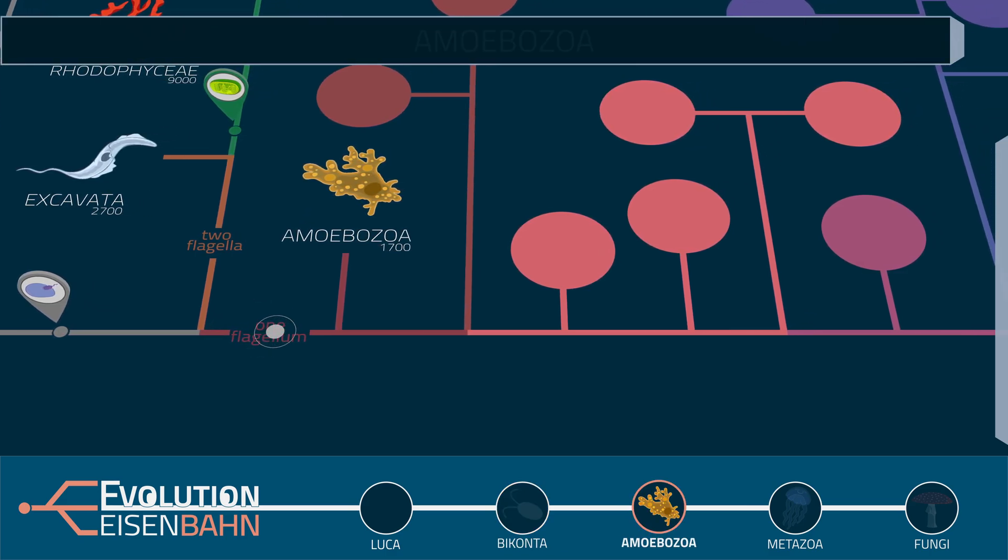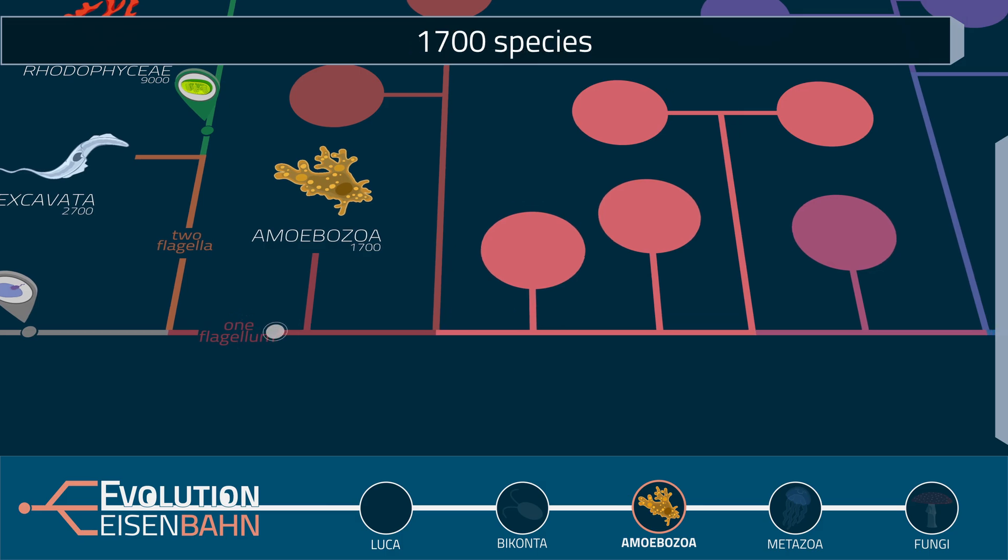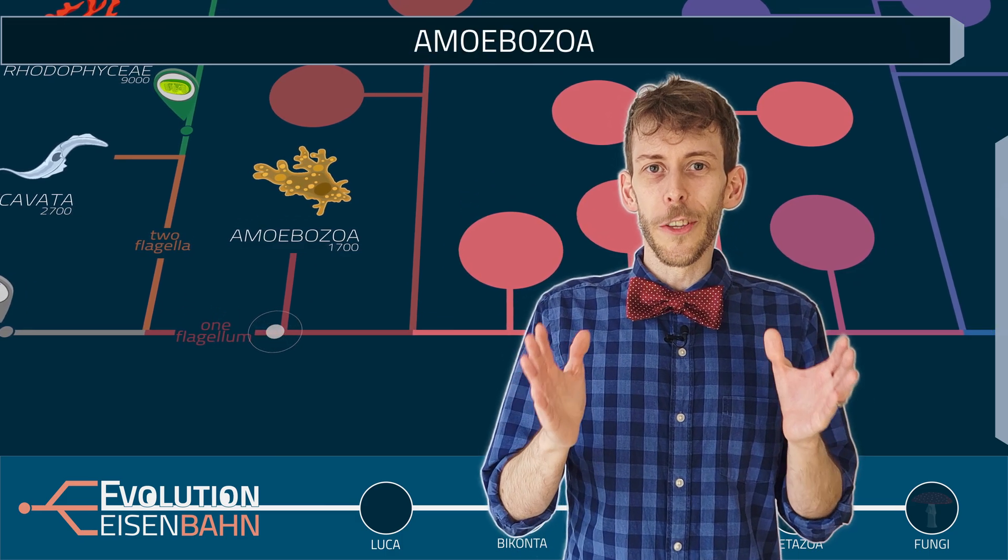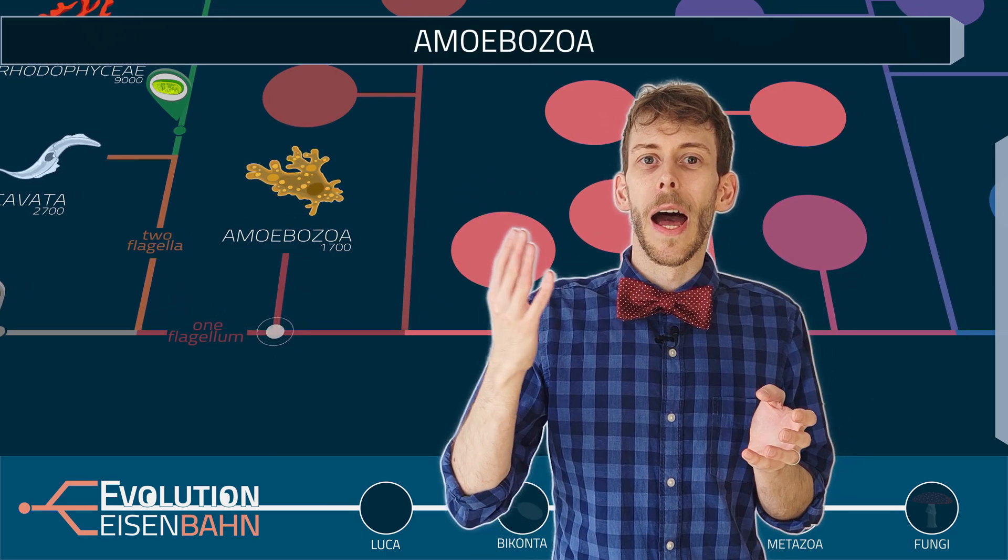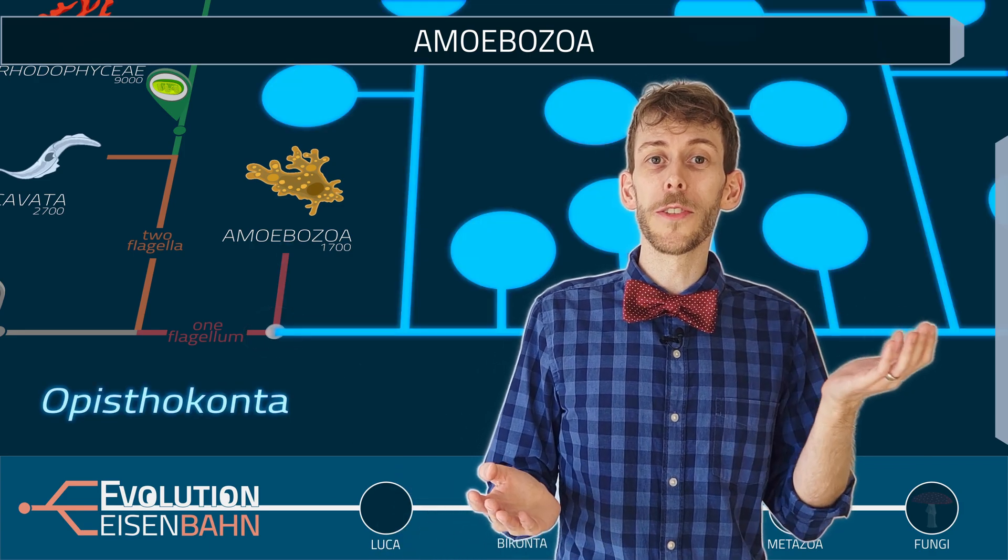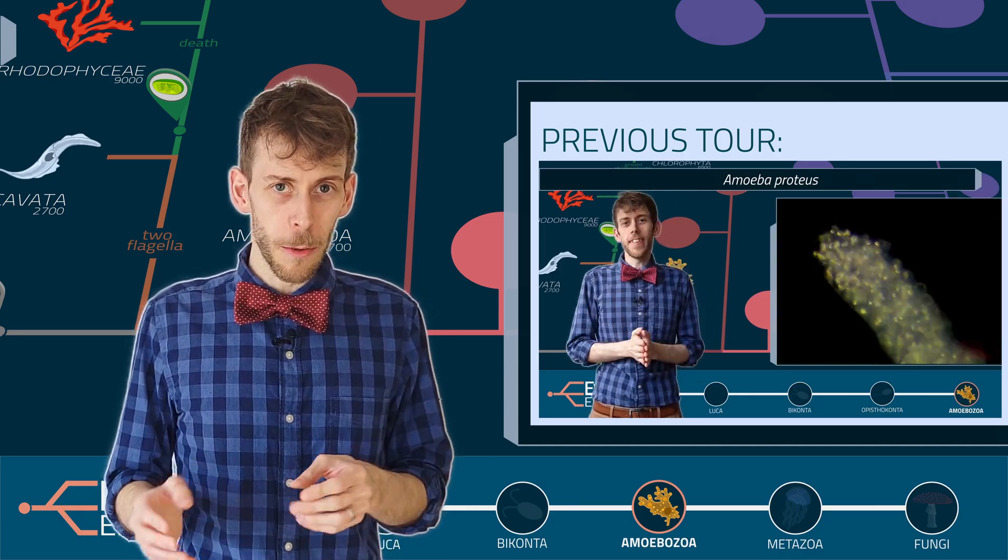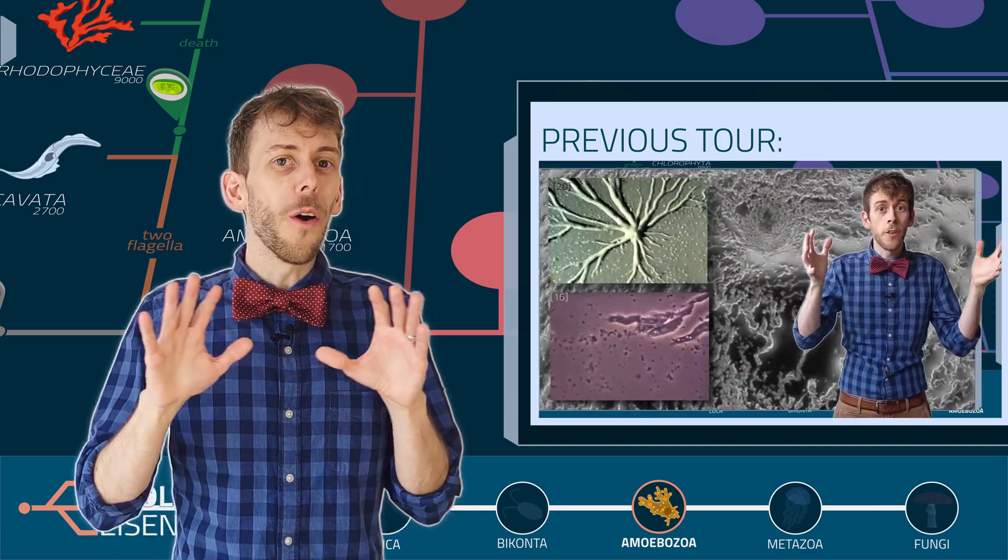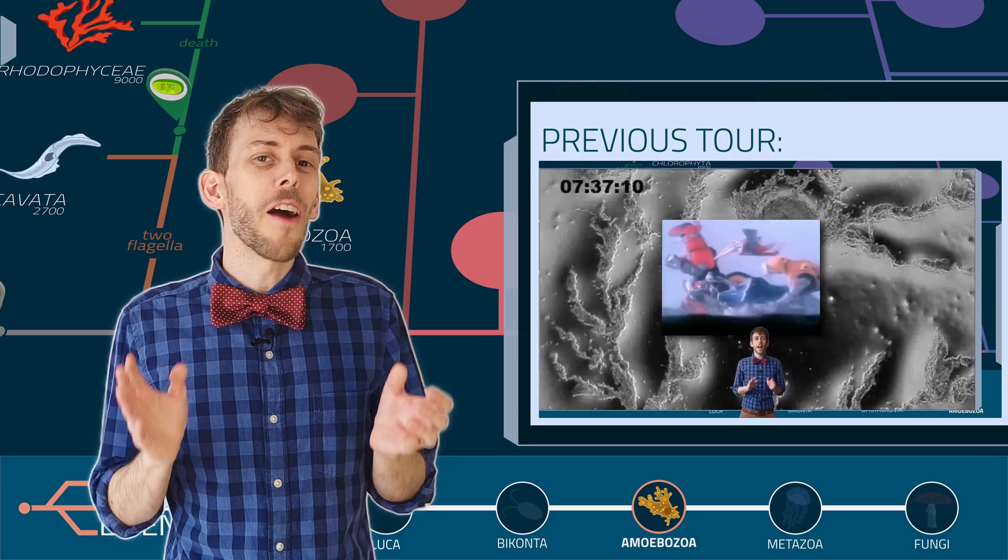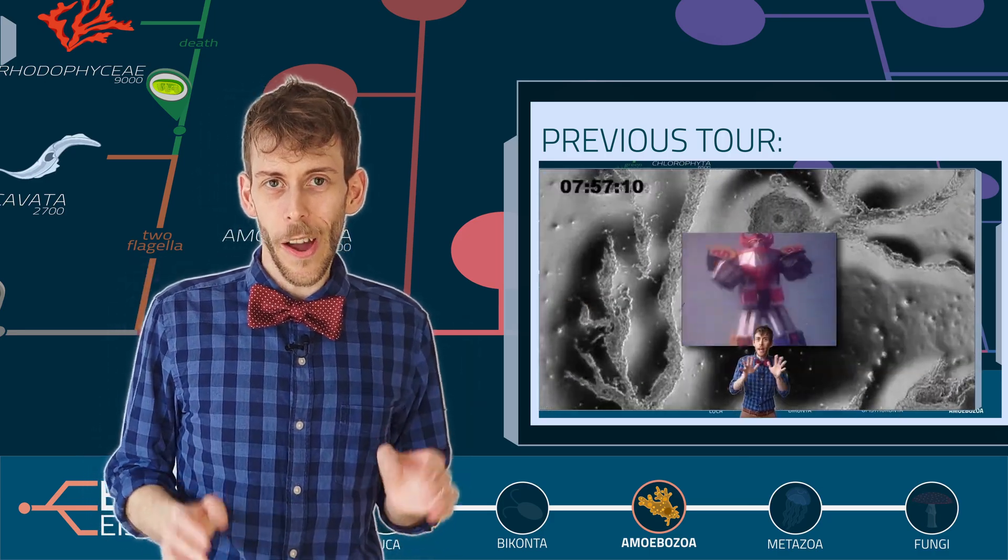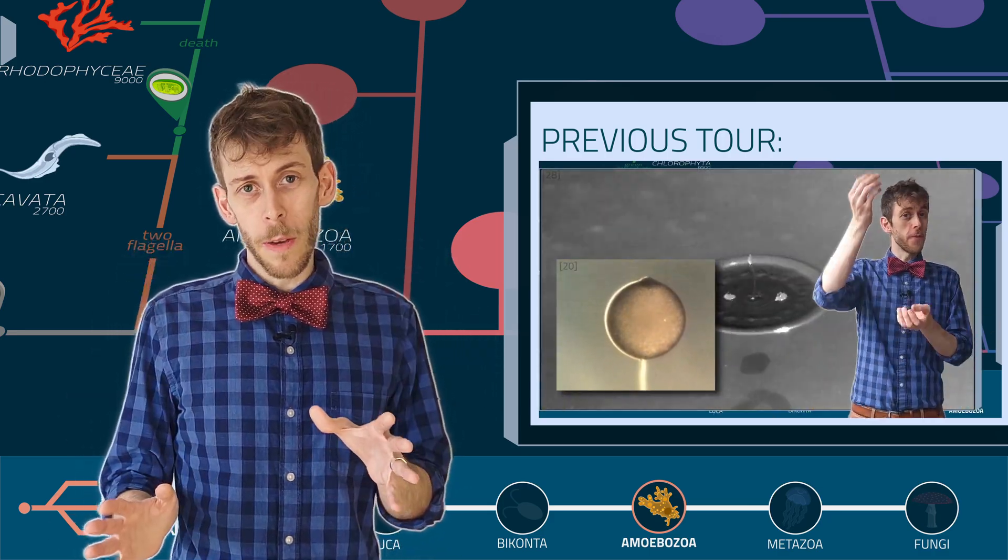Next stop, amoebozoa. And here the unicorns split into amoebozoa and opistoconta. Last tour I showed you what jaw-dropping abilities the amoebozoa have. Even though they're all single-celled beings, they are incredibly complex, so now I hope you think twice about labeling them as primitive.